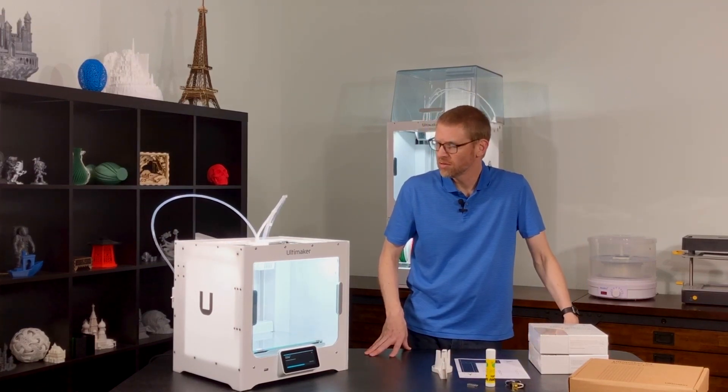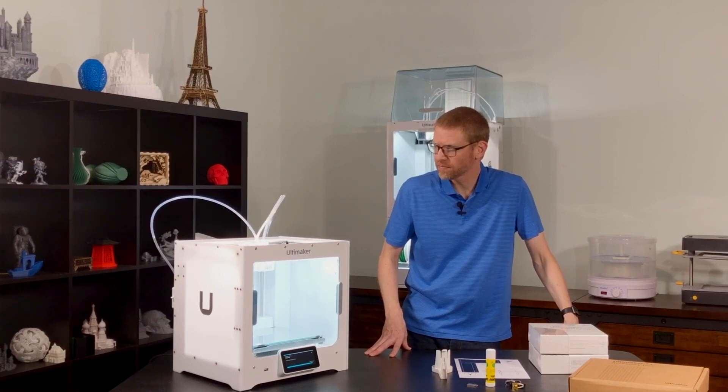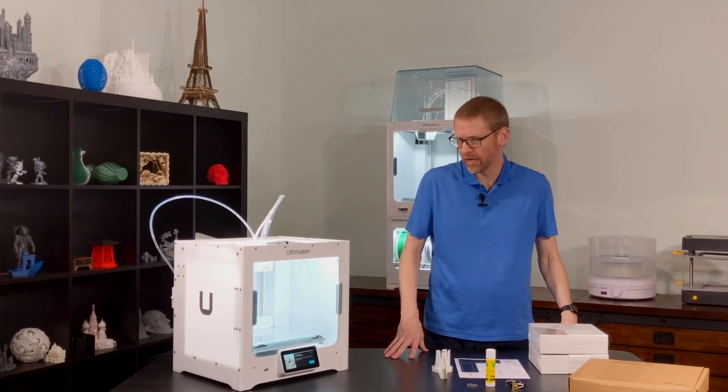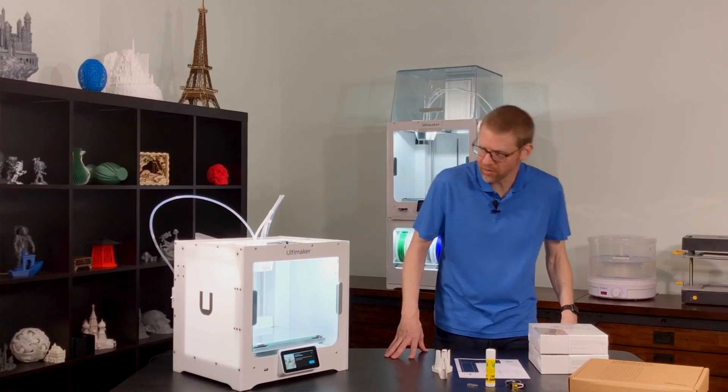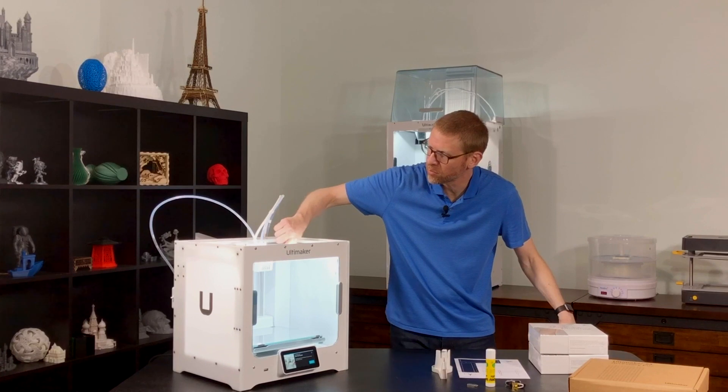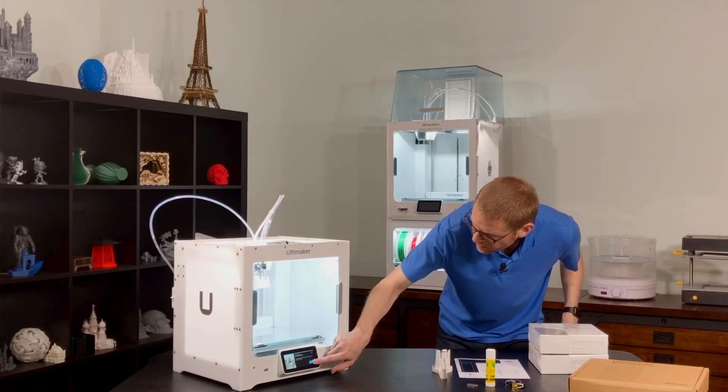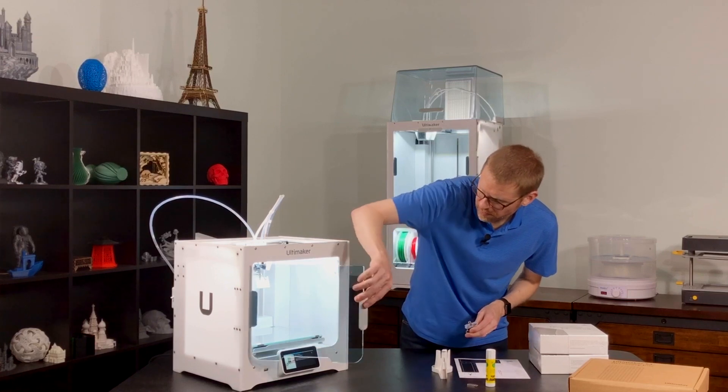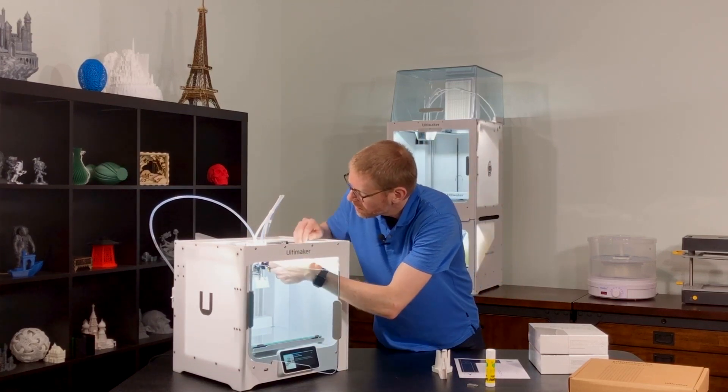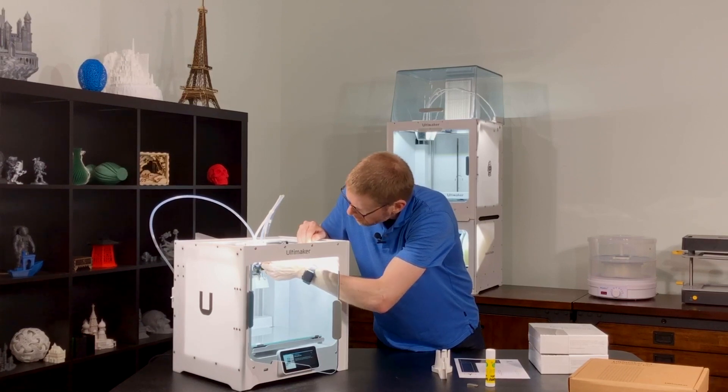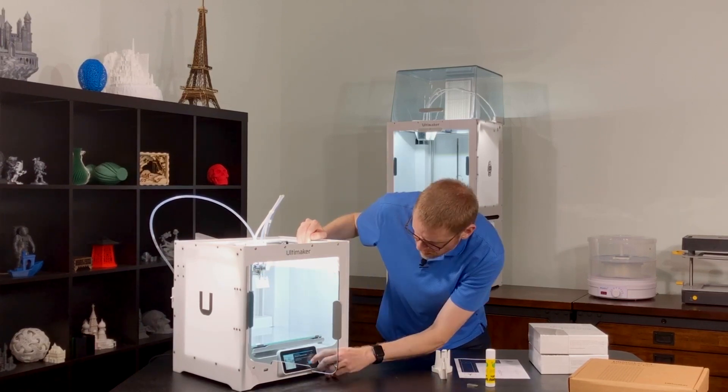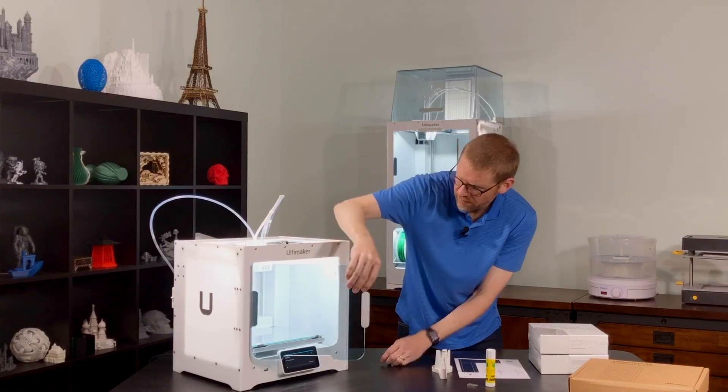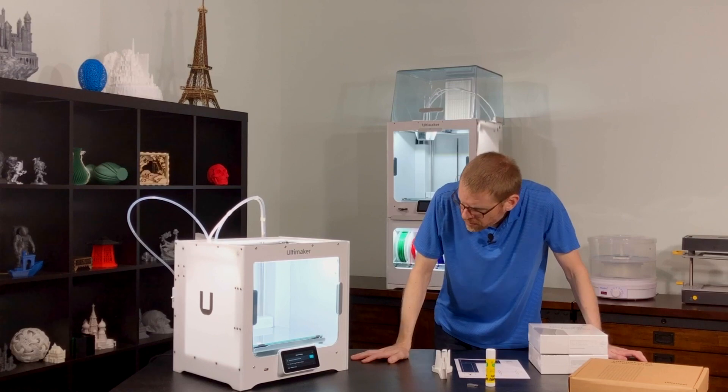So now it says open the fan bracket. The new touch panel display gives us nice video and photo prompts where needed to show us exactly what needs to be done. In this case, it's showing us to open this fan bracket for the print cores. Go ahead and confirm. Now insert the print core. So I've got my BB.4 print core here. I'll just open the door and insert that print core. Confirm. I'm going to close that bracket.